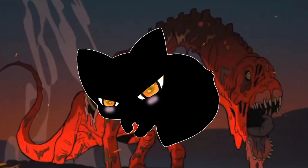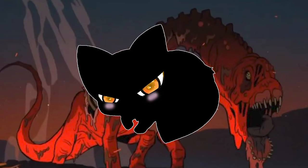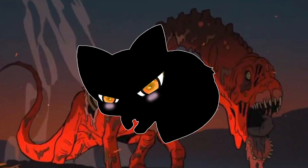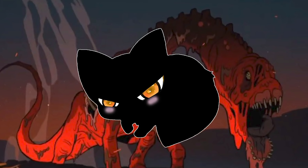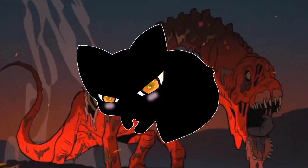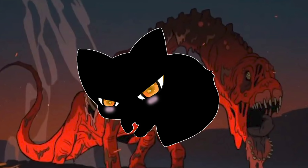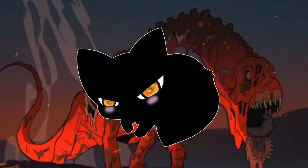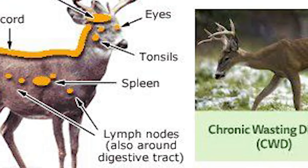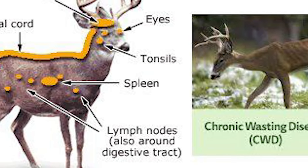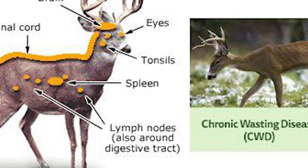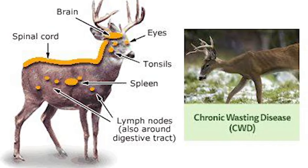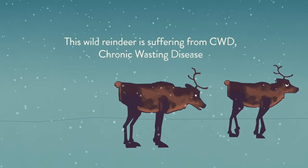Listen to the description of CWD — Chronic Wasting Disease — and its symptoms in more detail, and tell me if this doesn't remind you of what happened to the Camarasaurus and the Parasaurolophus in Plague of Madness. Most cases of CWD occur in adult animals; the youngest animal to exhibit clinical symptoms was 15 months. The disease is progressive and always fatal. The first signs are difficulties in movement. The most obvious clinical sign is weight loss over time. Behavioral changes also occur, including decreased interactions with other animals, listlessness, lowering of the head, tremors, repetitive walking in set patterns, and nervousness. Excess salivation and grinding of the teeth are also observed, and most deer show increased drinking and urination.